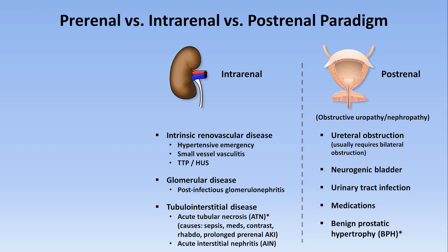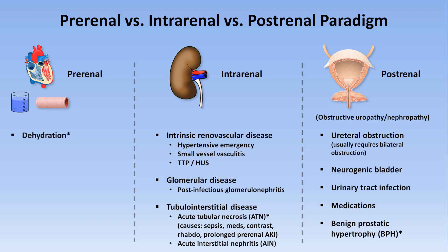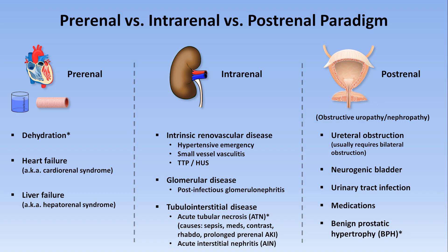Just as we have etiologies that occur downstream from the kidneys, we have those that occur upstream as well, which predictably lead to pre-renal AKI. Pre-renal AKI is due to some problem with getting blood to the kidneys — this can be a primary cardiac issue, an issue with the blood vessels, or an inadequate volume of blood circulating. Specific etiologies include dehydration from any cause, heart failure leading to kidney injury (sometimes called cardiorenal syndrome), and liver failure leading to kidney problems (called hepatorenal syndrome). Dehydration, ATN, and BPH are by far the most common causes of AKI among hospitalized adults.